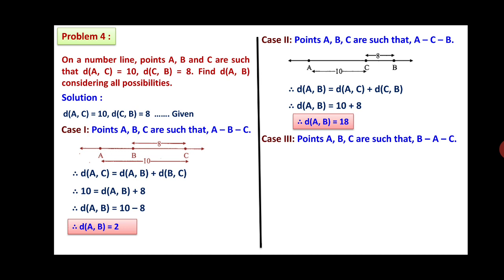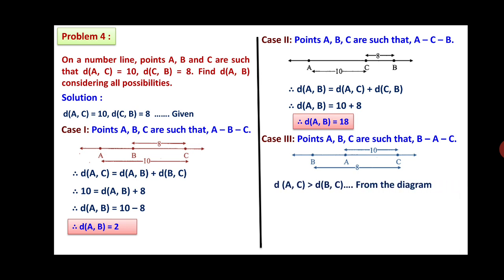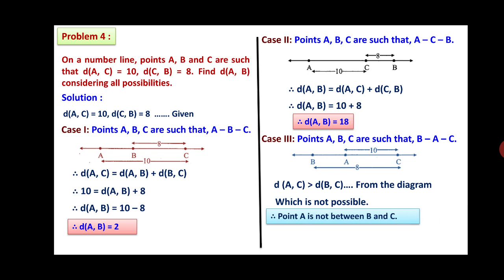Case 3: A is between B and C (betweenness B, A, C). However, from the diagram, distance AC is greater than distance BC, which is not possible for this arrangement. Therefore, point A is not between B and C — this case is false. Only two distances are possible: distance AB is 2 (case 1) and distance AB is 18 (case 2). The third case is not possible.